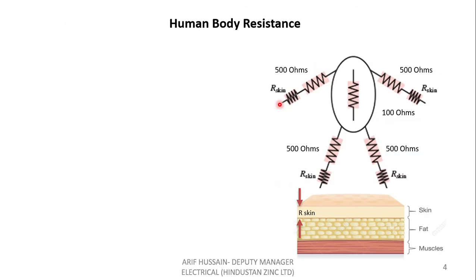Now let us see human body resistance. In this example, we can see the resistance of the hand, the resistance of the foot, and the resistance of the upper portion of the body. These are tentative resistances — around 500 ohms for the hand and 100 ohms for the foot. Looking at the human anatomy, we have a layer of skin, a layer of fat, and a layer of muscle. What we are talking about is this thin layer — the skin resistance. This plays a very vital role when a person gets an electric shock.